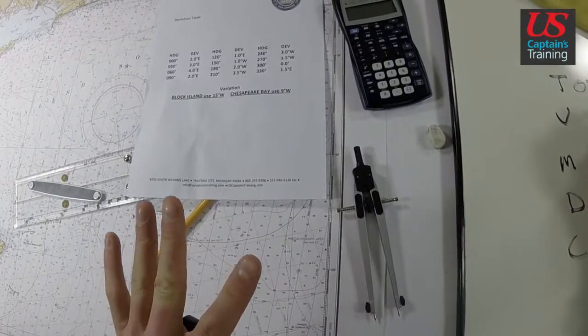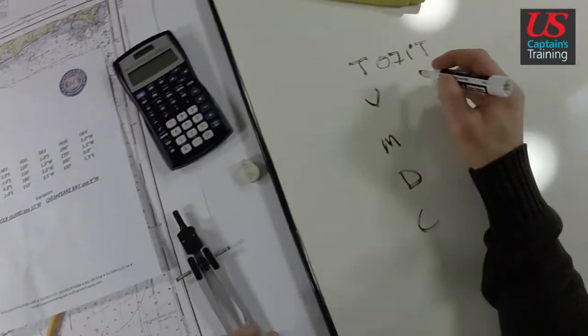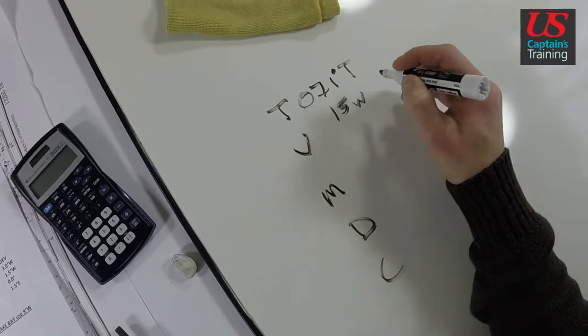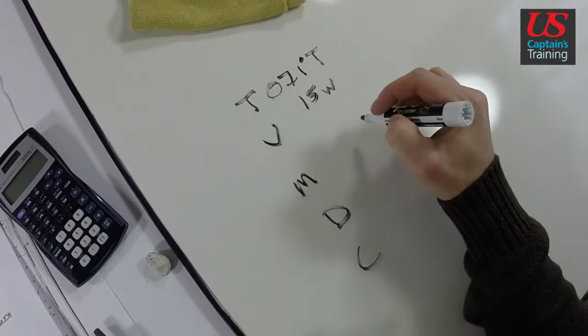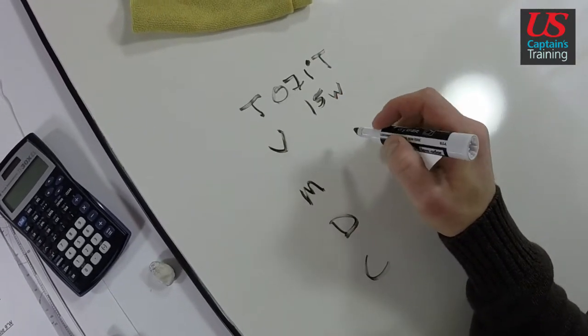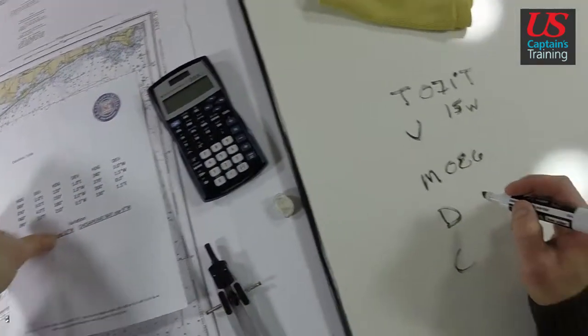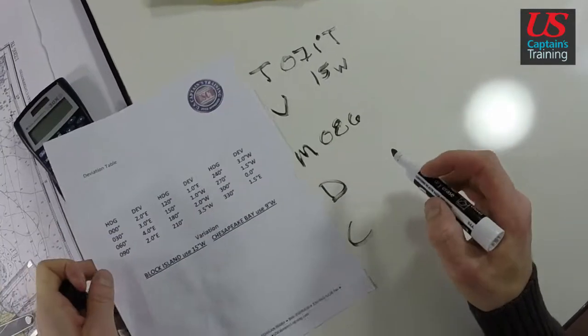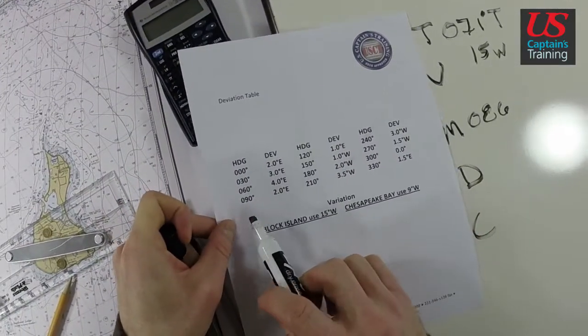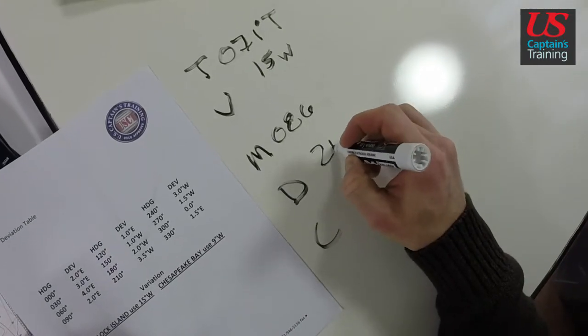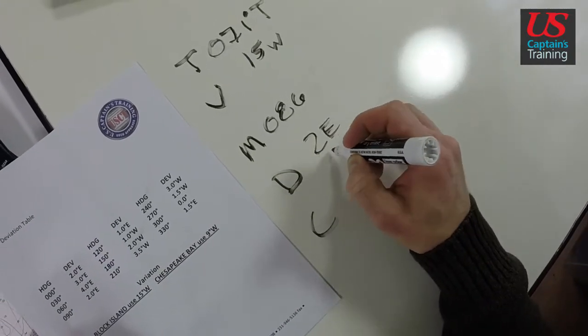Variation. On Block Island chart, we always use 15 west for the purposes of these problems. And we add west going down, which is 86, 086. Deviation for 86 is, so it's pretty close to 90, we'll say 2 east. Going down, we subtract east.